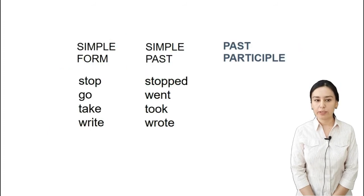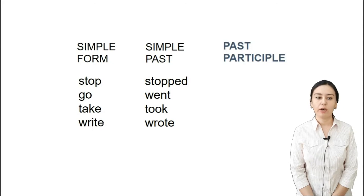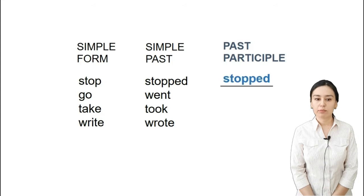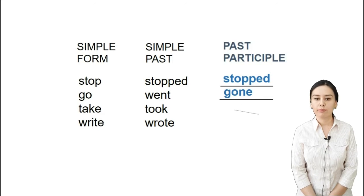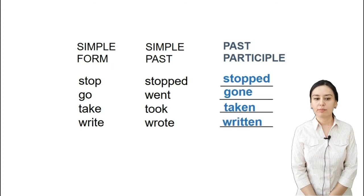Let's have more practice with mixed forms of irregular and regular verbs. 'Stopped' — past participle is the same: 'stopped'. Next verb 'go' — past simple is 'went', and past participle is 'gone'. Next: 'take', 'took', 'taken'. 'Write', 'wrote', 'written'.